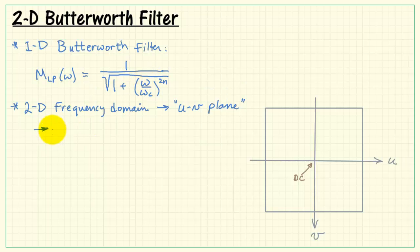Now the key is to consider frequency, this frequency variable omega. We'll take that as being the radius, that is, the distance away from DC.